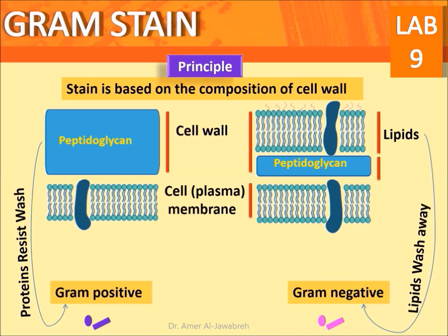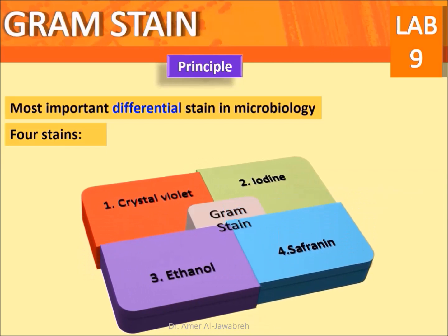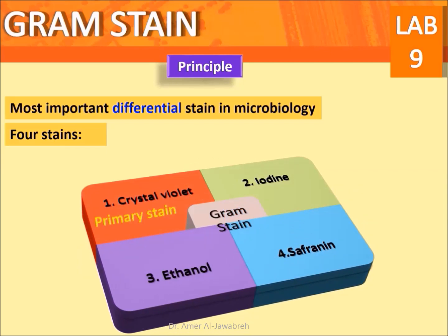The Gram stain is the most important differential stain in microbiology. It consists of four stains: crystal violet as the primary stain, iodine as the mordant, ethanol as the decolorizer, and safranine as the counter stain.